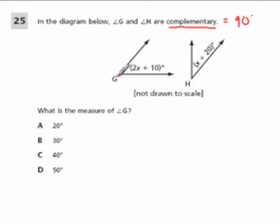So they're telling us that angle G, which is this angle right here, and angle H, which is this angle right here, if I add them up, I get 90 degrees. So let's do that.